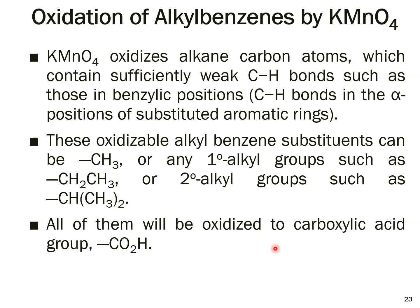Next is the oxidation of alkyl benzenes by potassium permanganate. KMnO4 oxidizes alkane carbon atoms with sufficiently weak C–H bonds, such as those in benzylic positions — carbons directly attached to a phenyl ring. The electron density of the ring weakens these C–H bonds, making them easily oxidized. Oxidizable alkyl benzene substituents include methyl, primary alkyl groups like ethyl, and secondary alkyl groups — all are oxidized to a carboxylic acid group.